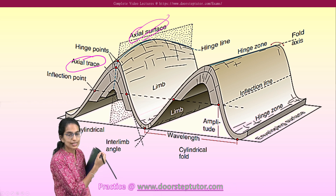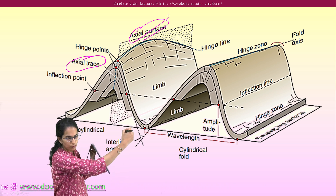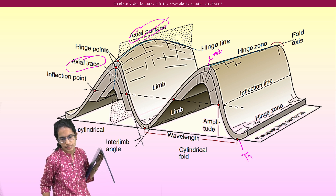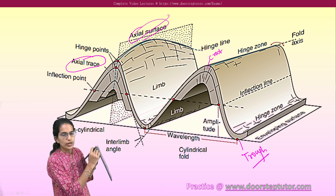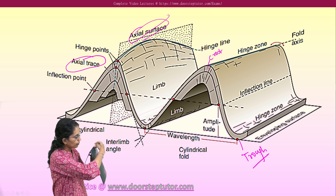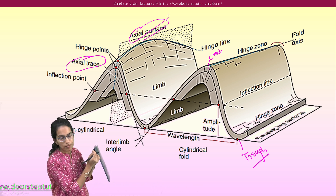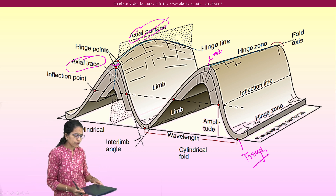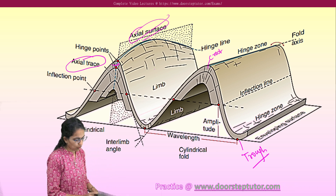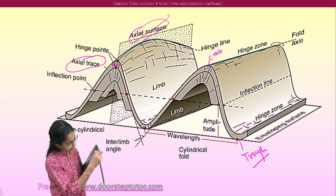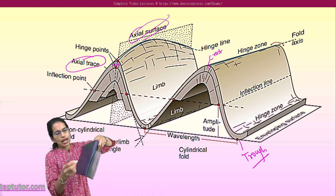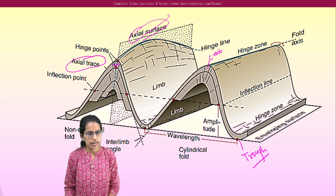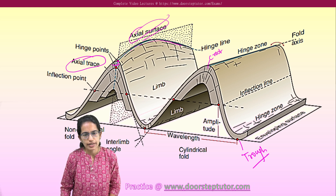The point at the top of the fold is called the crest. The point at the bottom where the next fold begins is called the trough. The hinge point is the point where you have the minimum inter-limb angle. When you draw a line through the crest and where the axial plane cuts across, that gives you the hinge line. The hinge points on the surface connect behind into the hinge line.